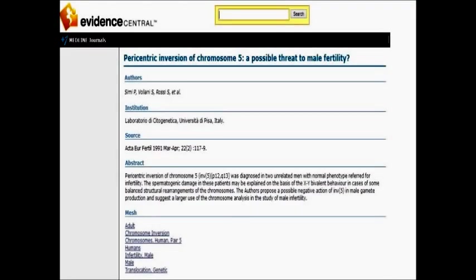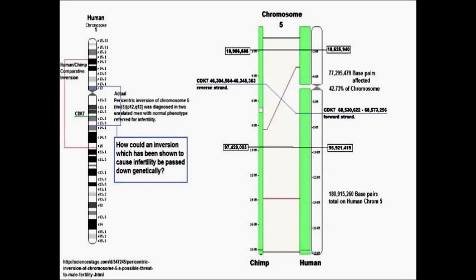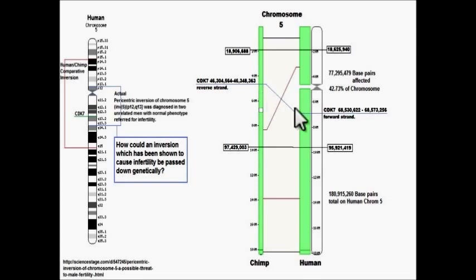Here's another one for paracentric inversion of chromosome 5 — a possible threat to male fertility. And when we compare the human and chimpanzee genomes for chromosome 5, we see a substantial paracentric inversion on chromosome 5.